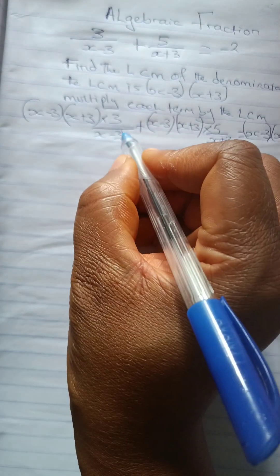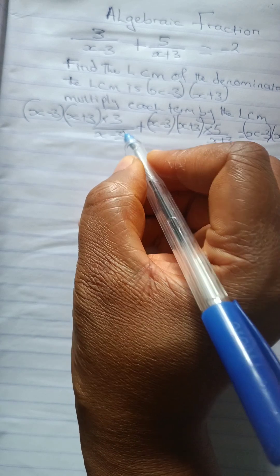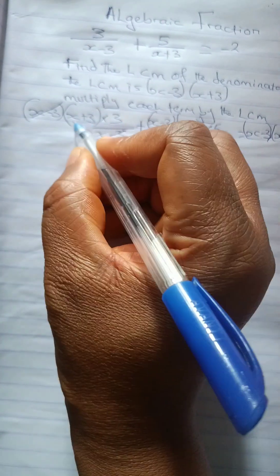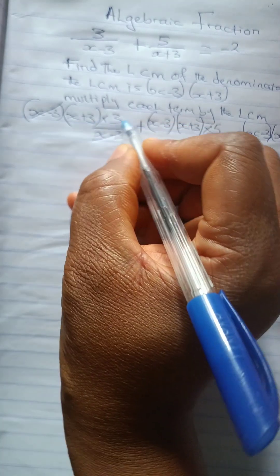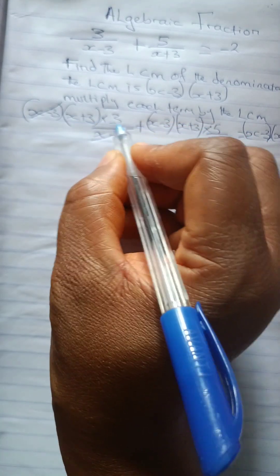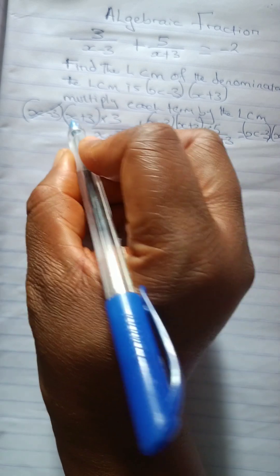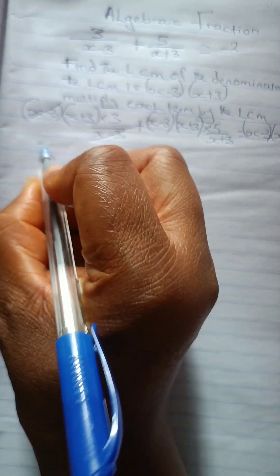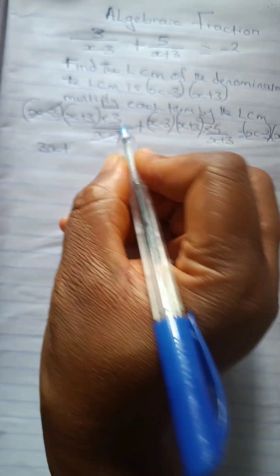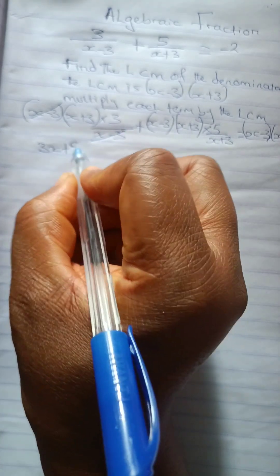So we'll cancel out this x minus 3. We cancel out x minus 3. So what do we have left? We have x plus 3 times 3. So let's just go straight to the multiplication. 3 times x is 3x plus 3 times 3 is 9.